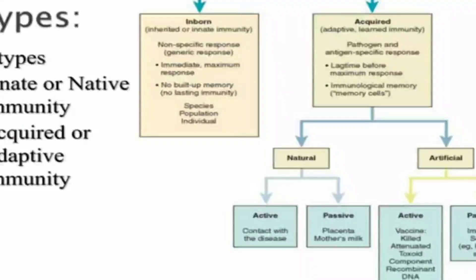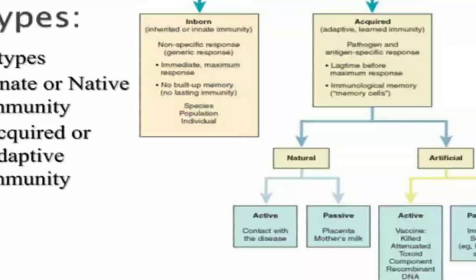Innate immunity is inherited and can be immediate — meaning maximum response after entry of any pathogen or antigen — or built up due to memory cells. It can be divided into individual immunity, species or racial immunity, and population immunity.